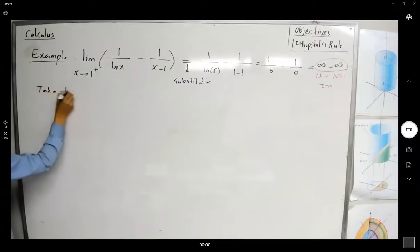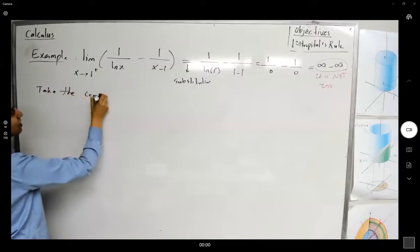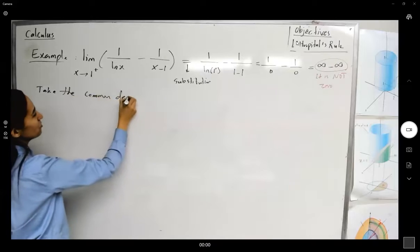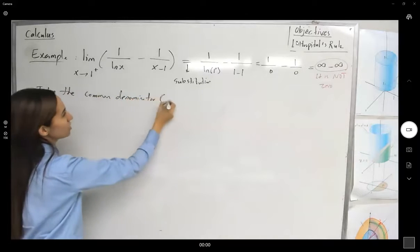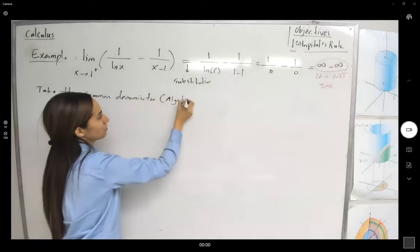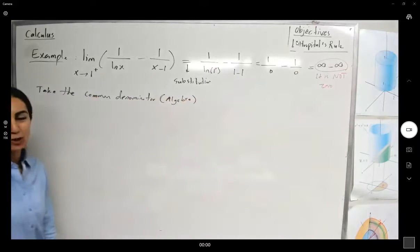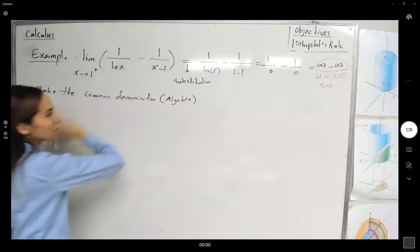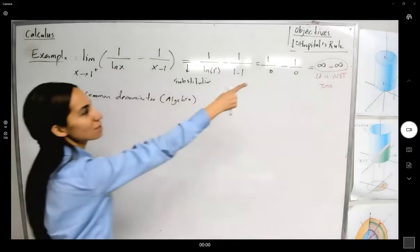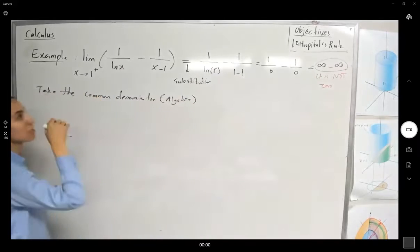Take the common denominator. We are going back to algebra. Nothing calculus about it. Just taking the common denominator. Why is that? Because it's not 0, it's indeterminate form.